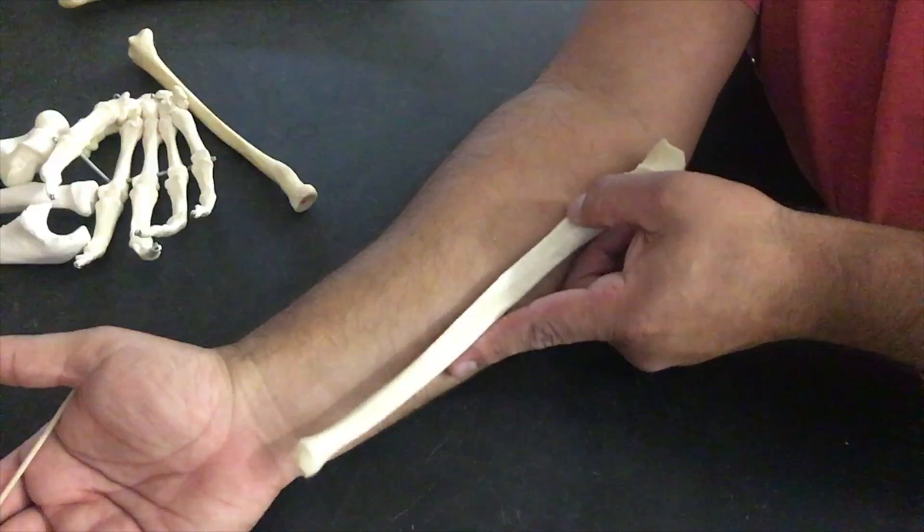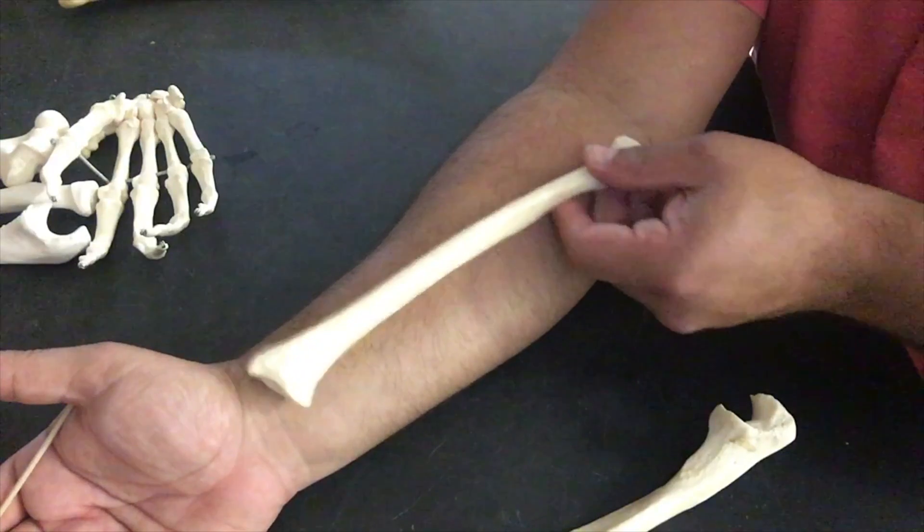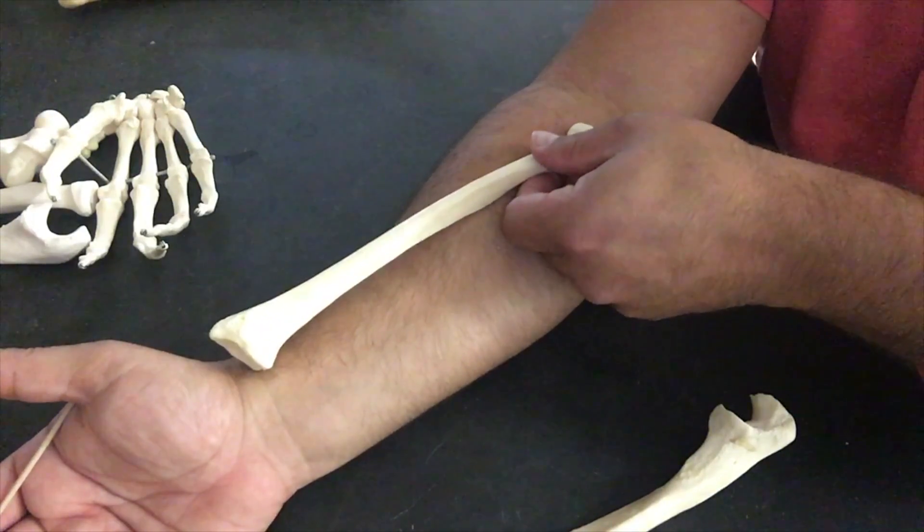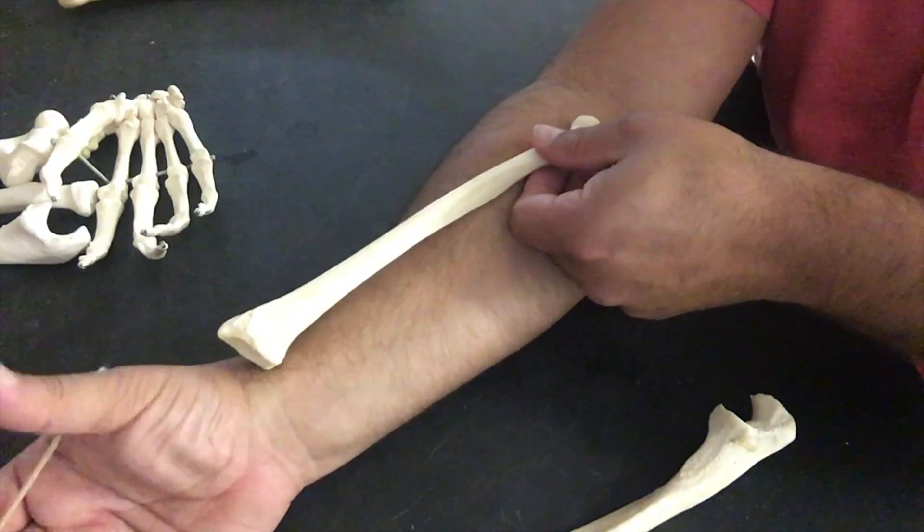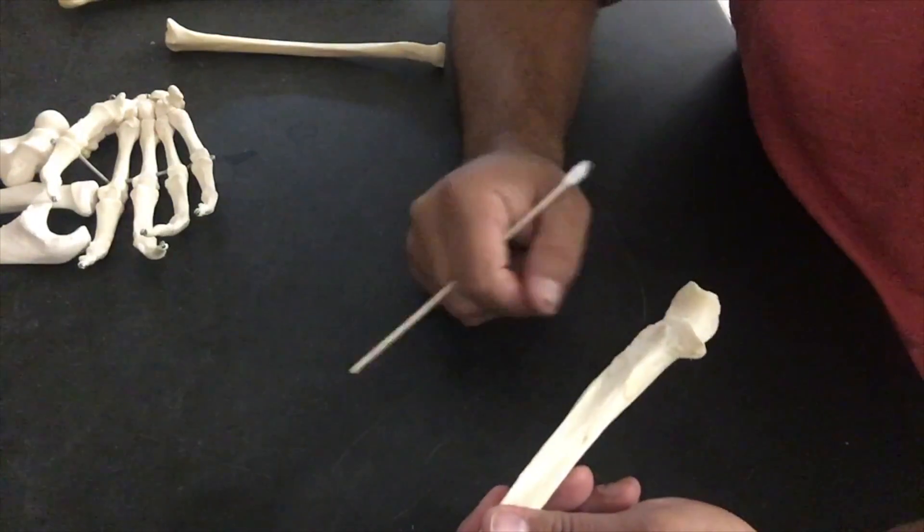The ulna on the pinky side is a medial most bone, whereas—and I'm just going to give you a sneak peek right here—the radius is a lateral most or thumb side bone. We'll look at that in a little bit, so let's get back to the ulna. We know it's a medial bone.